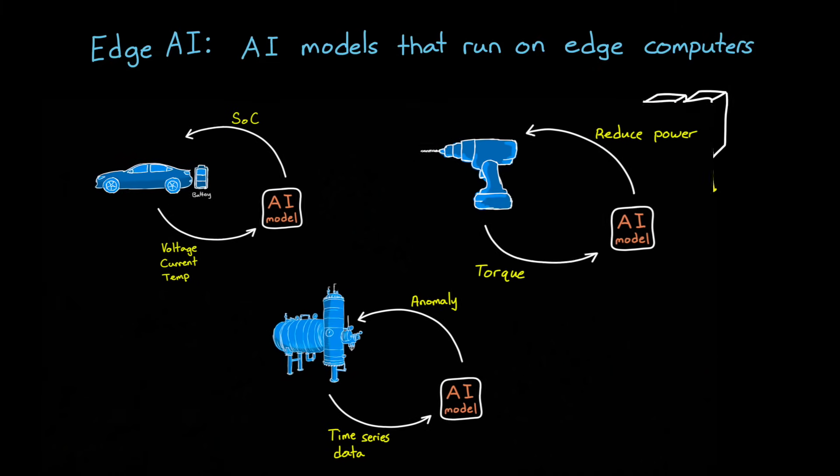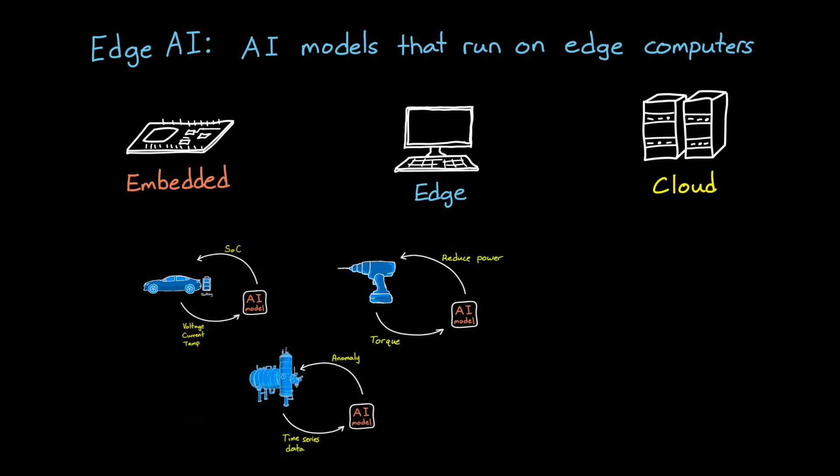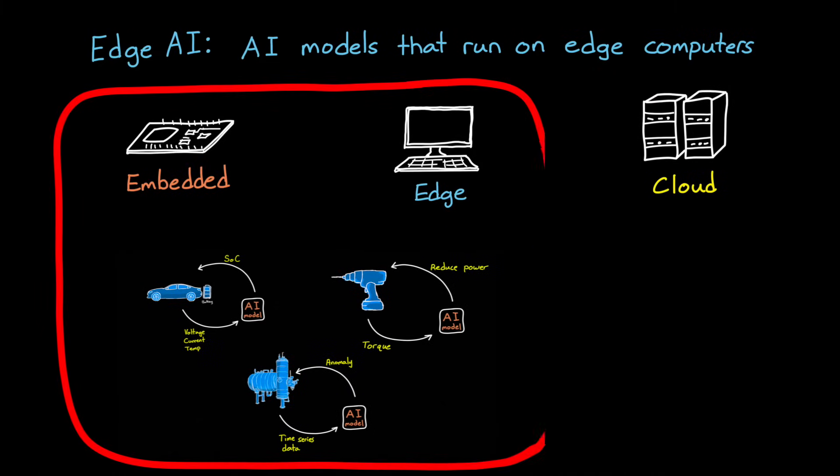Now, in each of these situations, there are benefits to running the AI model on edge and embedded computers rather than on the cloud. So, what are some of those reasons? Well, the first is reduced latency. Sending data across the internet to a cloud server and then receiving a response after your model runs takes time. And for safety-critical systems, where the device needs to take action as quickly as possible, that latency might add an unsafe amount of delay to the response.